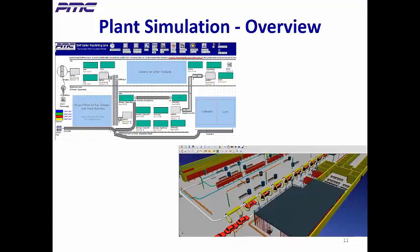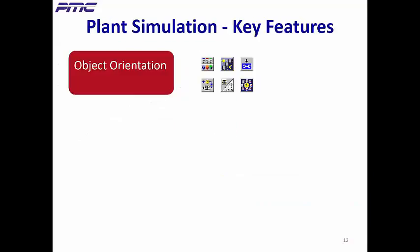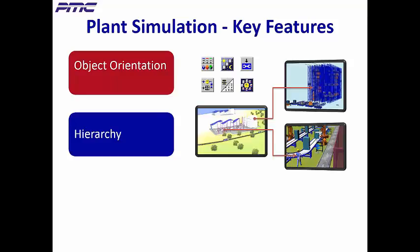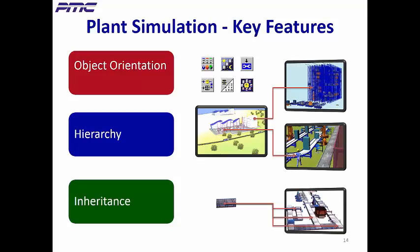Plant simulation is overflowing with useful features, but I'd like to point out three of its unique key features. Object orientation provides intuitive use of powerful, built-in, and custom-made objects that let you build models quicker. Hierarchy lets you structure complex models in an intuitive manner, making it easier to make changes without tediously rearranging things as other flat-structured products require. Inheritance lets you make changes in one place; all children are changed accordingly, ensuring quality and saving you a lot of time.